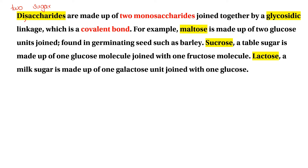Sucrose is 1 glucose molecule joined with 1 fructose molecule. If you want to know how to use glucose molecules, you can use them. If you want to eat all the fruits, you can add two fructose units.